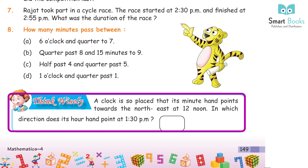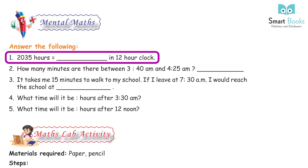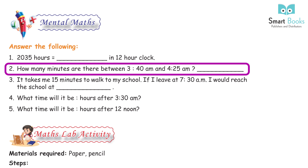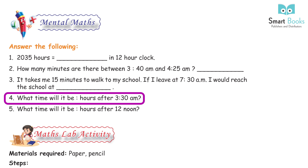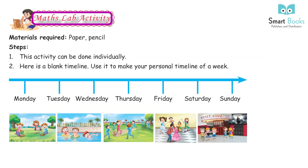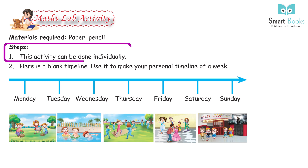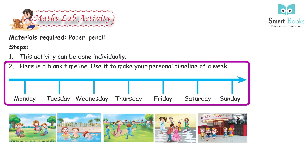Think wisely: A clock is placed so that its minute hand points towards the north-east at 12 noon. In which direction does its hour hand point at 1:30 PM? Mental maths: 1. 20:35 hours equals what in 12-hour clock? 2. How many minutes are between 3:40 AM and 4:25 AM? 3. It takes 15 minutes to walk to school; if I leave at 7:30 AM, when do I arrive? 4. What time will it be one hour after 3:30 AM? 5. What time will it be 5 hours after 12 noon? Maths lab activity: Materials required — paper and pencil. Create your personal timeline of a week: Monday, Tuesday, Wednesday, Thursday, Friday, Saturday, Sunday.